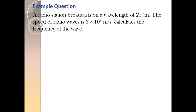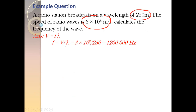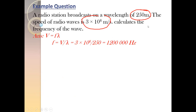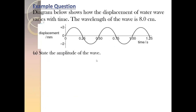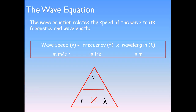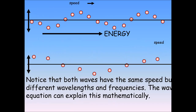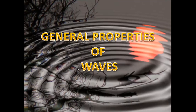Another question: a radio station broadcasts on a wavelength of 250 m. The speed is 3 × 10⁸ m/s. Calculate the frequency. Frequency = speed ÷ wavelength = 3 × 10⁸ ÷ 250 = 1.2 × 10⁶ hertz, or 1200 kilohertz. This concludes the topic of waves — the concept of waves, their types, and the definitions related to waves. A wave is basically a mode or way of energy transfer.